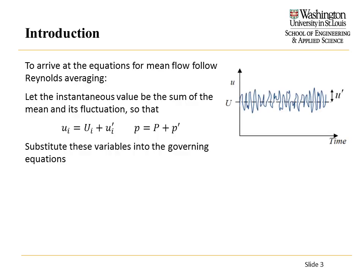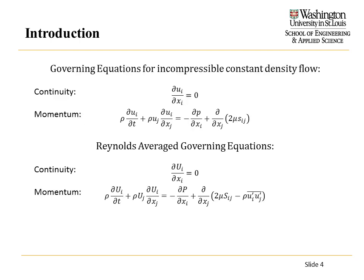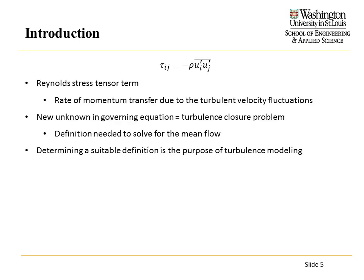To do this, we'll decompose instantaneous flow fields in terms of a mean value and some fluctuation from that mean value. We then substitute these directly into the governing equations. In doing this, we get out almost exactly the same thing, except our equations are in terms of the mean values, but an additional term appears.